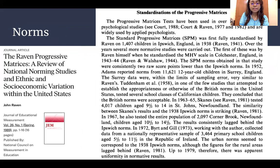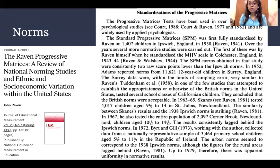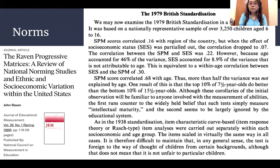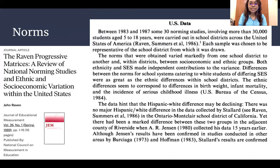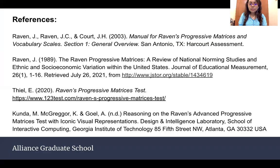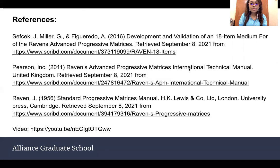For the norms, since this is a widely used test, it was first standardized by Raven on 1,407 children in Ipswich, England in 1938. There were many normative studies carried out after that, with norms established in the US and other countries including Asian countries. That's just a quick run-through — I wanted to record this as a good reference for me and for those who want to know more. These are my references. Thanks.